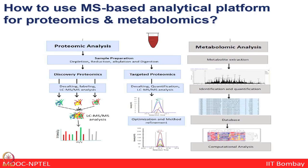The question comes: how to use mass spectrometry-based analytical platforms for proteomics and metabolomics analysis? From the same sample — say you want to look at the serum proteome and metabolome — you can deplete abundant proteins and proceed through reduction, alkylation, and digestion, using either a discovery-based workflow, label-free quantification, or targeted quantification to look at the host proteome or plasma proteome. From the same sample, you can also extract metabolites and identify them by mass spectrometry or NMR.